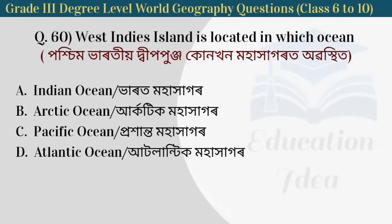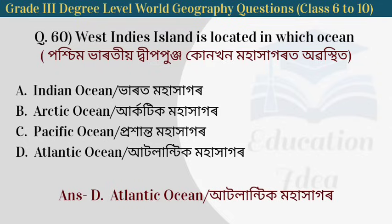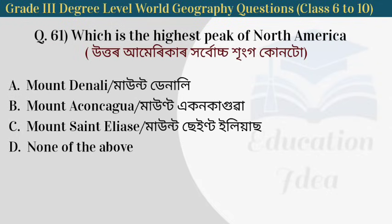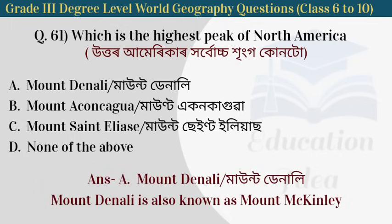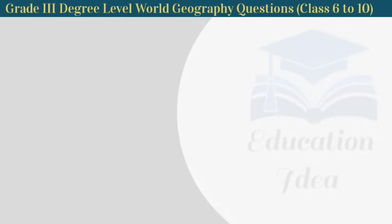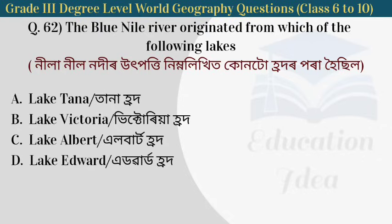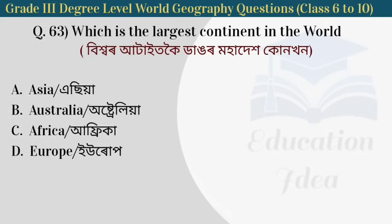Next question: the West Indies are surrounded by which ocean? The answer is the Atlantic Ocean — the West Indies are located near North America. The Nile River originates from which source?